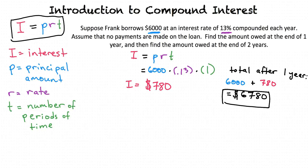$6,780 becomes our new principal amount, and we still use 1 for T because we are solving for another 1 year period. Substitute these numbers in and solve for I.